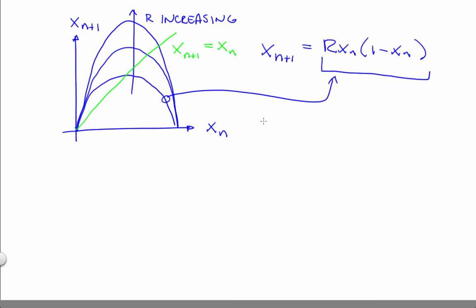Now recall the definition of a fixed point. A fixed point x* is a point where the dynamics don't move. So the fixed points of this system have to be on that green line, and they also have to be on the blue parabola. So you can see the crossings are where the fixed points could be.